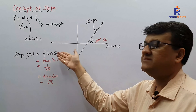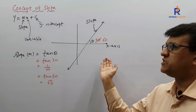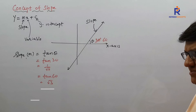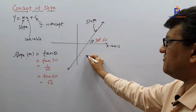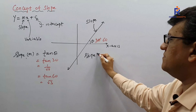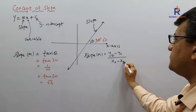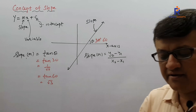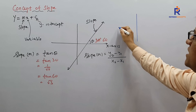Now, if you are asking how this formula came about — there is one more formula for slope. Slope is also given by m = (y2 − y1) / (x2 − x1). Let me make you understand how this particular formula came. Say this is my coordinate axis.